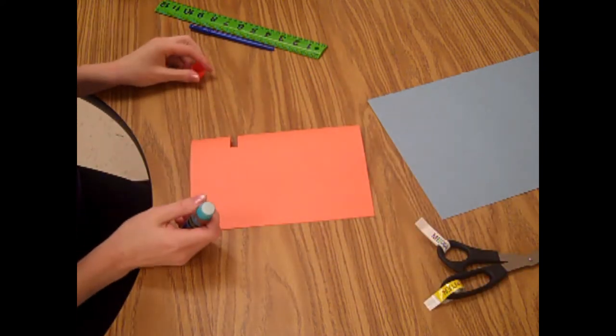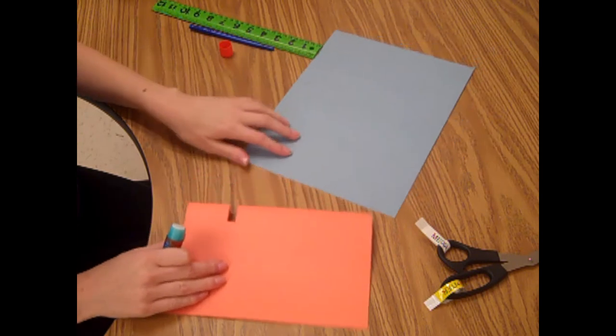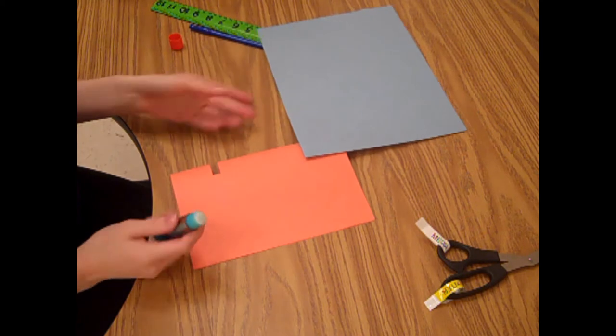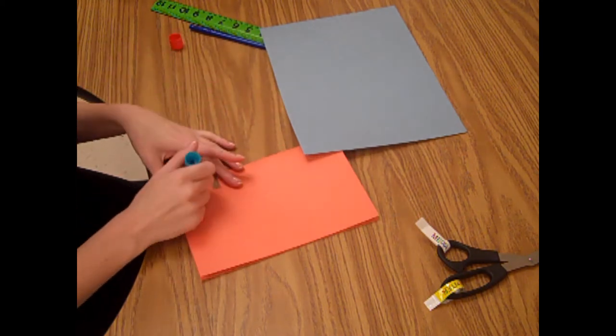Then you can either take this and put it all the way around, or you can keep going through your pop-out. So you glue this.